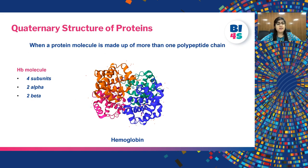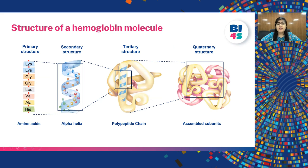For understanding the quaternary structure, let's look at hemoglobin. Hemoglobin is a large protein containing four polypeptide chains. Each of these chains is known as a subunit: there are two alpha subunits and two beta subunits. These subunits are made by different genes and then the protein products come together to form a single protein molecule. The overall primary structure folds to form secondary and tertiary structure, and quaternary structure forms when there are more than one subunits in a protein.